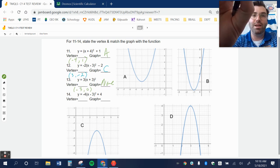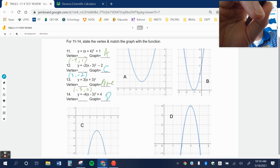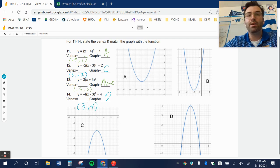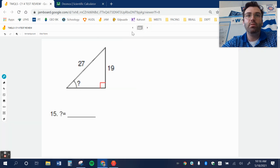Last one, by process of elimination I know that this answer is going to be D, but the vertex is going to be 3 comma 4. And I can also tell that by looking at this. Okay, what else? Let's pause there.